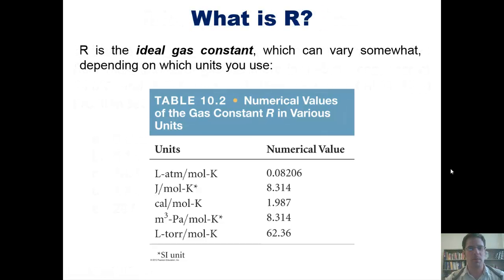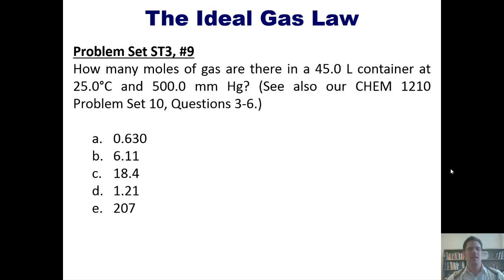Are you ready for some problems then? Here goes. How many moles of a gas are there in a 45 liter container at 25 degrees Celsius and 500 millimeters of mercury? I'm not going to do this for you, but I'll let you do it on your own. Keep in mind that you'll need to use the ideal gas law. Depending on which value of R you select, you'll also possibly and likely need to change your units from degrees Celsius, for example, to Kelvins and millimeters of mercury potentially to atmospheres.